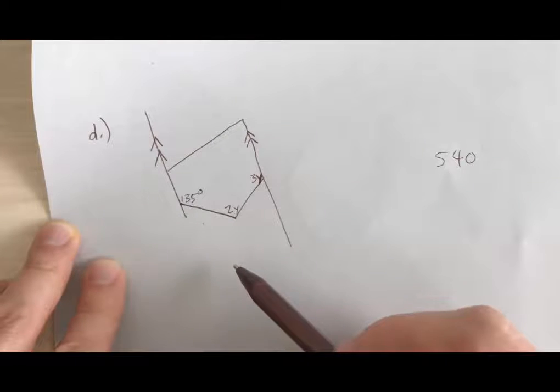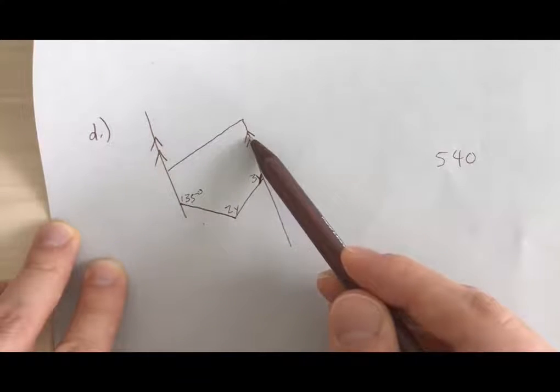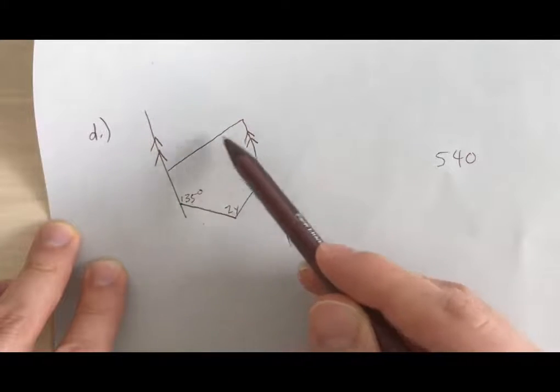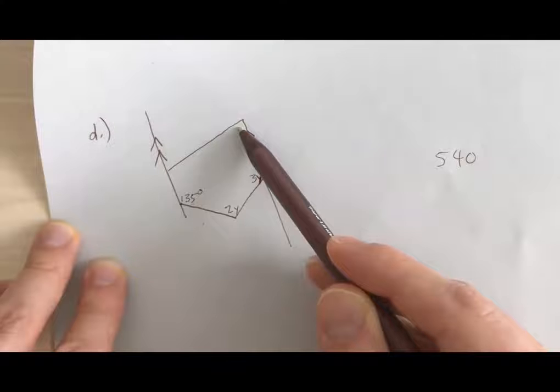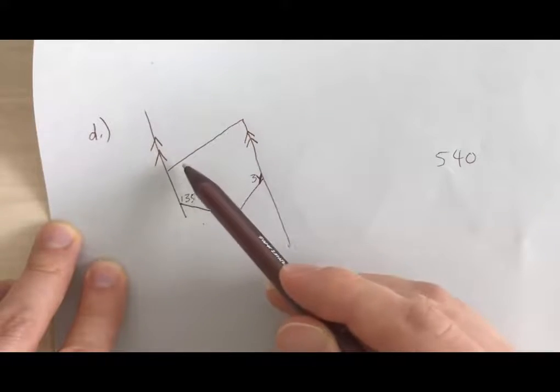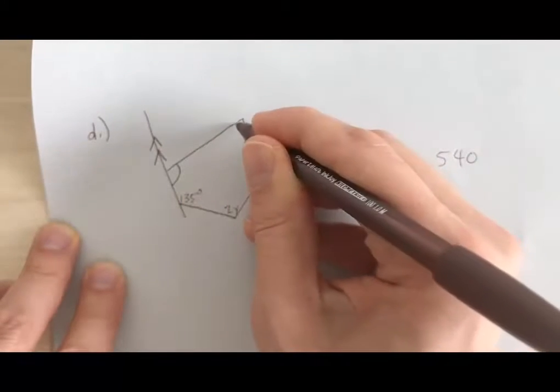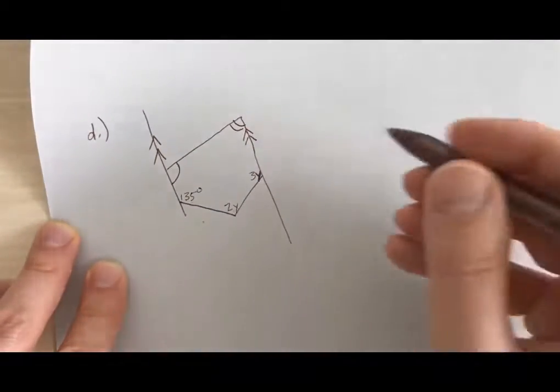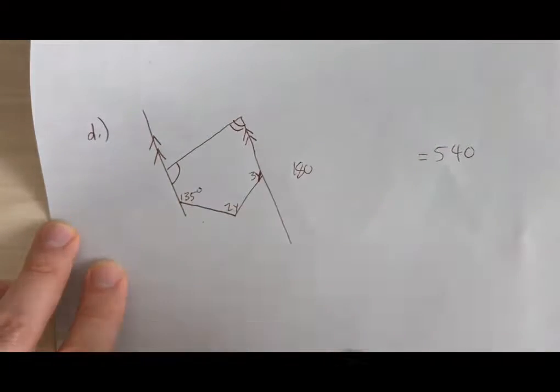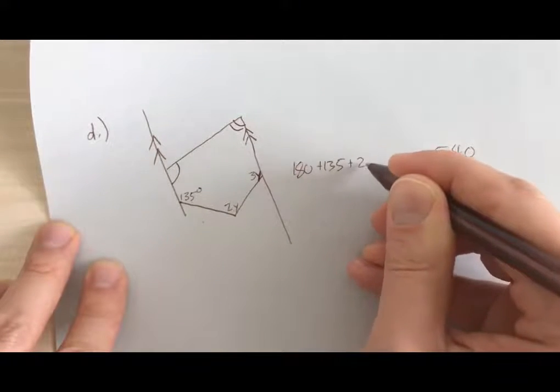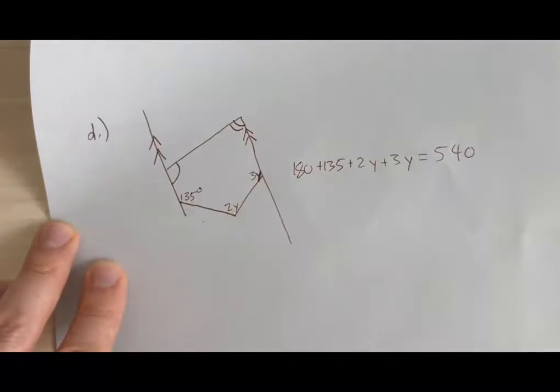Now we're going to use angle relationships, a little cheat here, because these are both parallel and this is the transversal. So these two would be same-side interiors, and same-side interiors, they're not going to equal each other, they're going to add up to 180. So I don't know what these ones are in particular, but I do know that this one plus this one will add up to 180. So when I'm making my equation, I'm going to say 180 from those two angles plus 135 plus 2Y plus 3Y will equal 540.